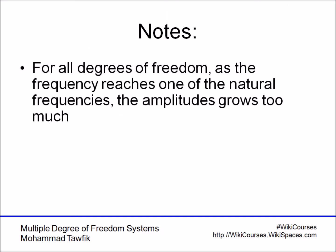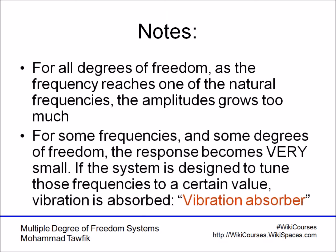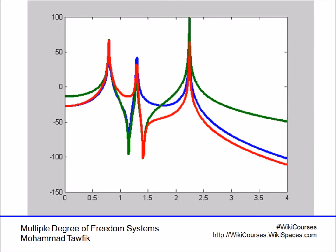The second observation is that there are some frequencies at which the system responds at very low amplitude. Looking at the graph, the first and third degrees of freedom, and also the second and third degrees of freedom, show very low amplitudes at certain frequencies. This is actually the idea behind what we call the vibration absorber — how to select masses and stiffnesses so that very low responses occur at certain target frequencies.